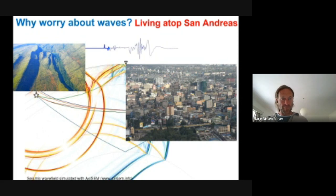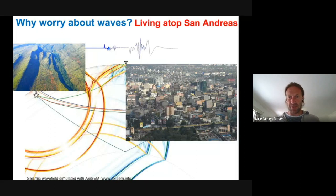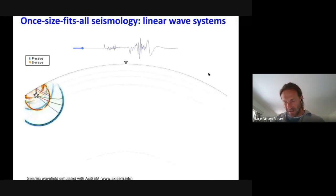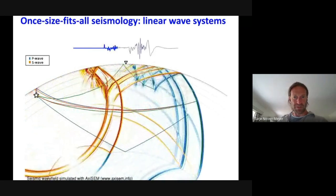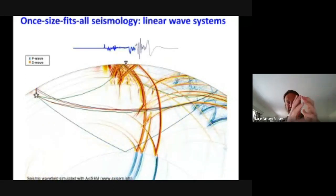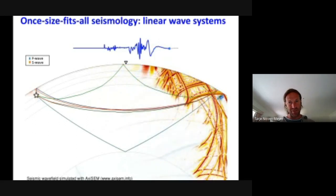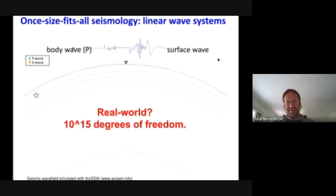So why do we worry about waves? This snapshot shows a seismic wave field propagating through the planet's interior — a point source on the left (an earthquake) and a triangle showing where we observe the waves as time series. Many of you are within miles of the San Andreas fault, so shaking is a real concern. In seismic hazard assessment, you have an earthquake fault as the equivalent source, some infrastructure you want to protect, and you need to characterize how strong shaking occurs — which requires characterizing what the wave does along its path. That is a truly three-dimensional problem.